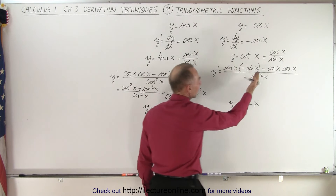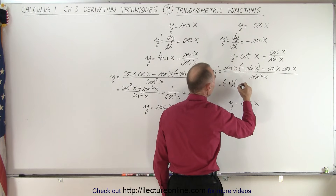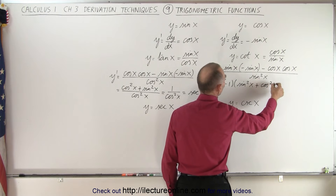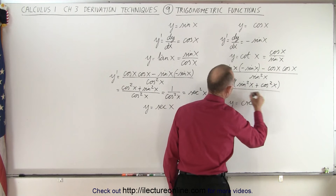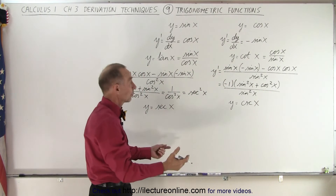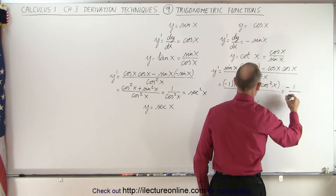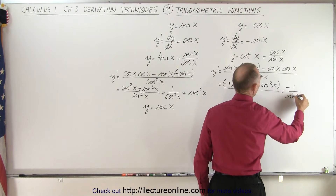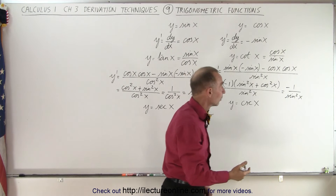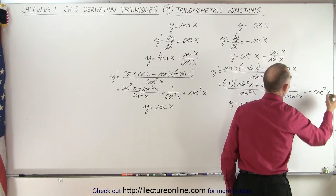Notice we can factor out a negative, so this becomes negative one times — here we have the sine times the sine, or sine squared of x, plus the cosine squared of x — all divided by the sine squared of x. Since sine squared of x plus cosine squared of x equals one, this is negative one over the sine squared of x, which equals minus the cosecant squared of x.